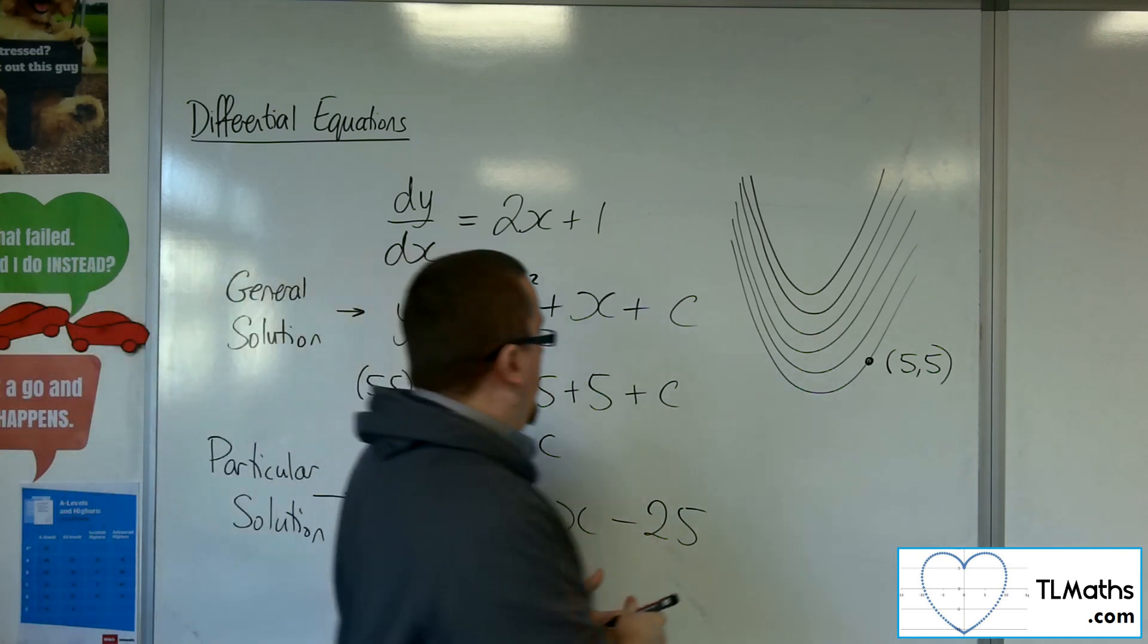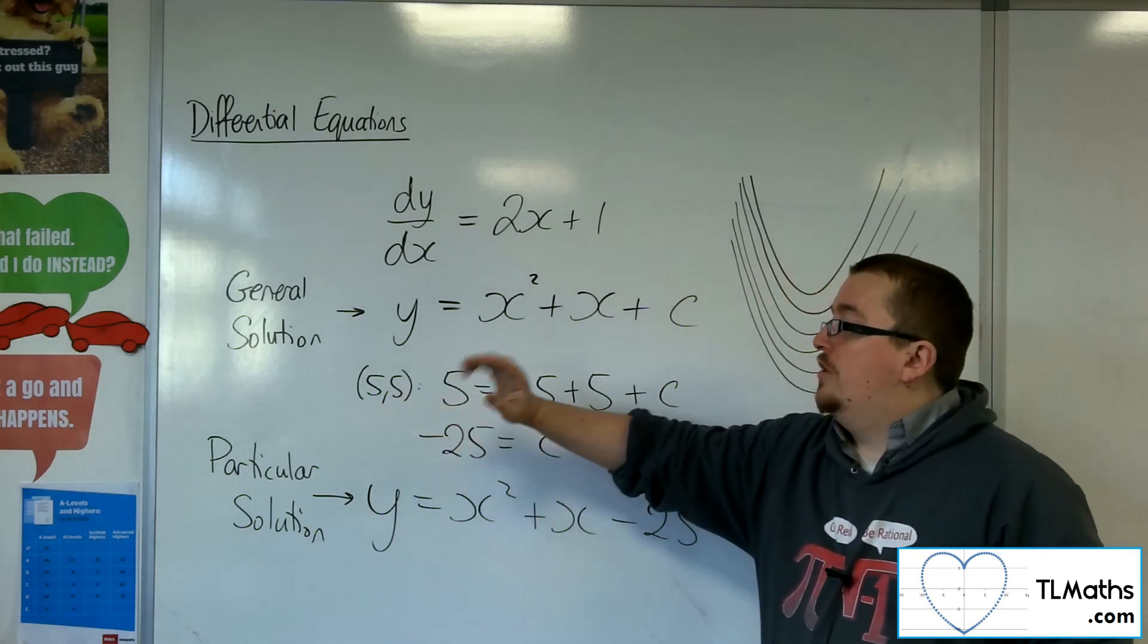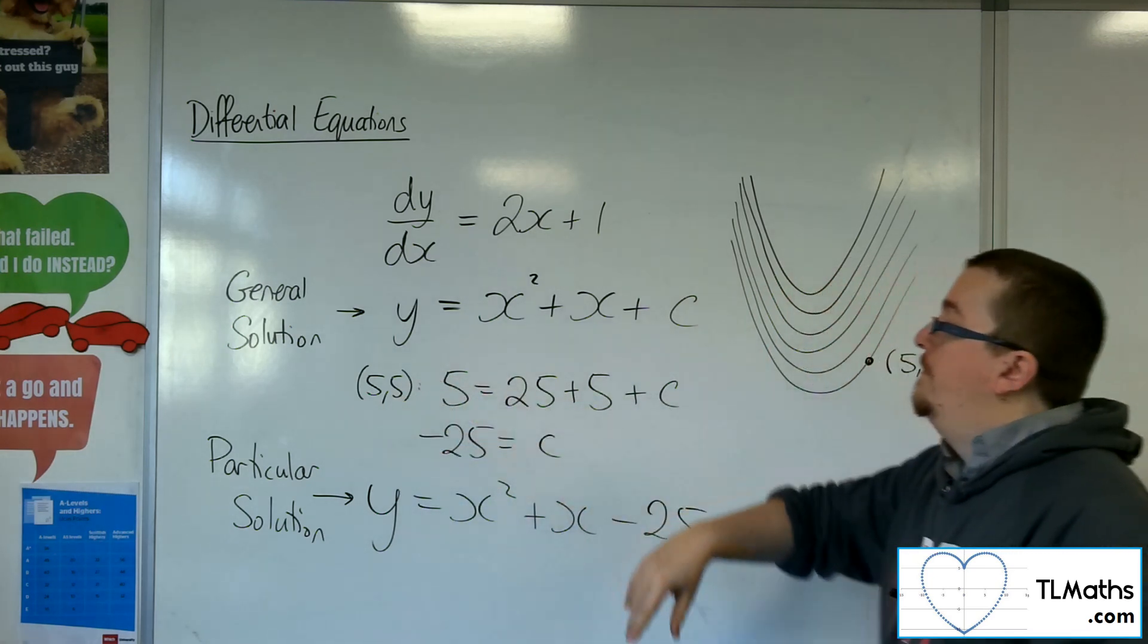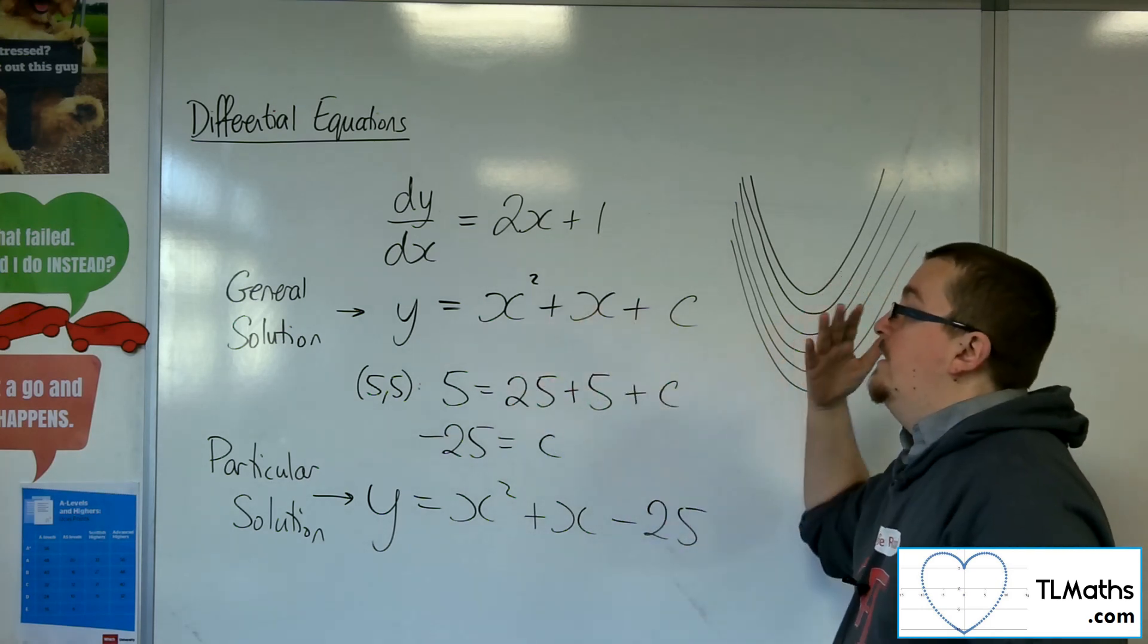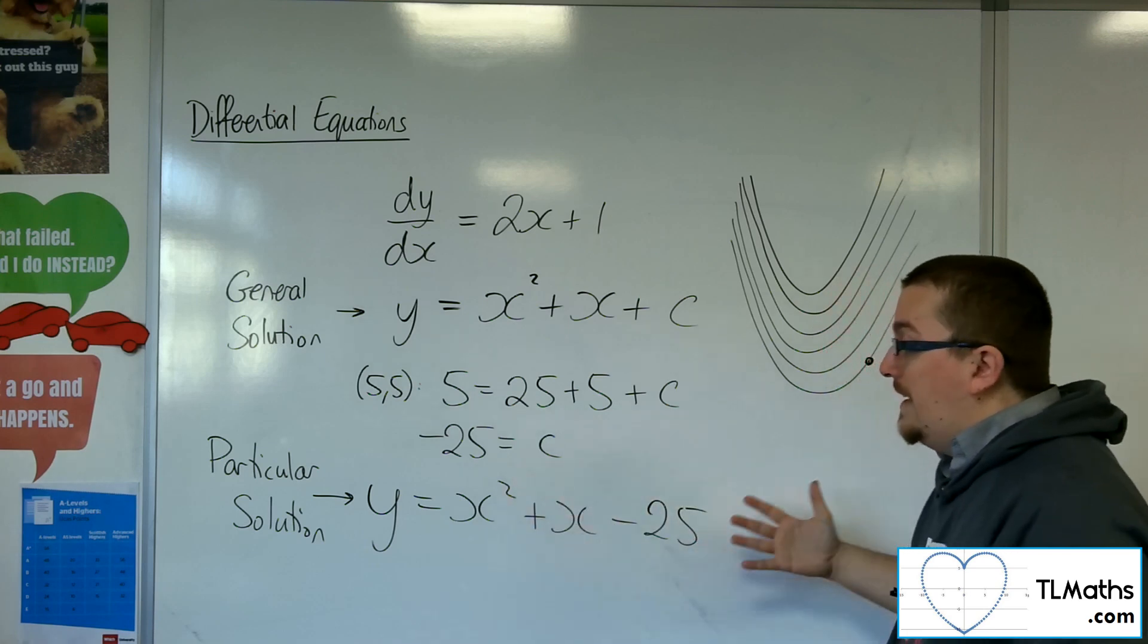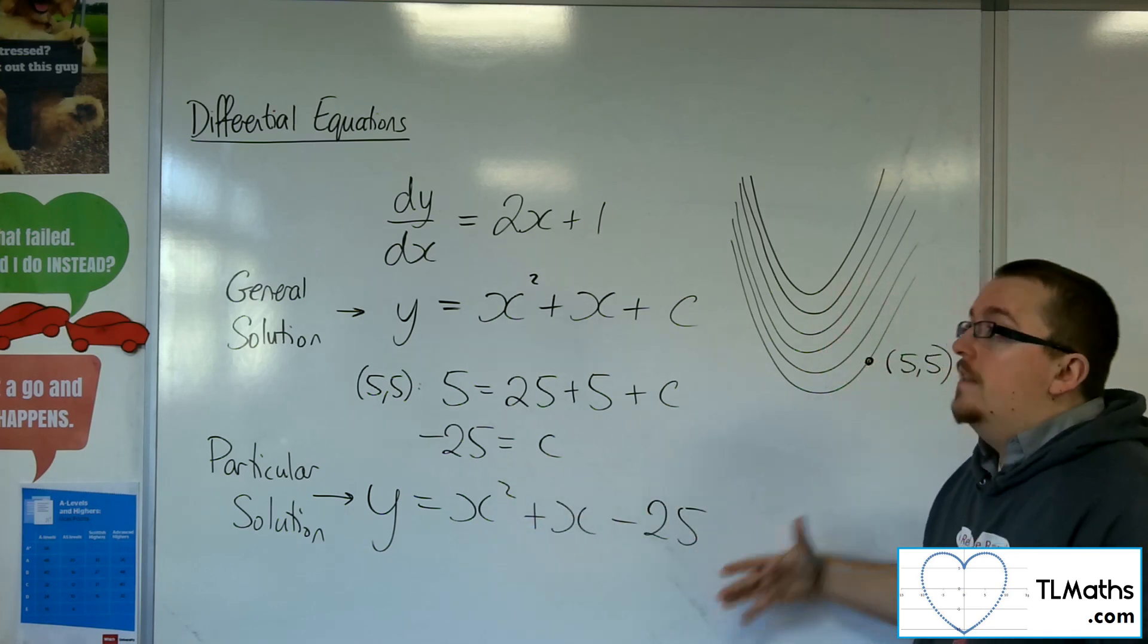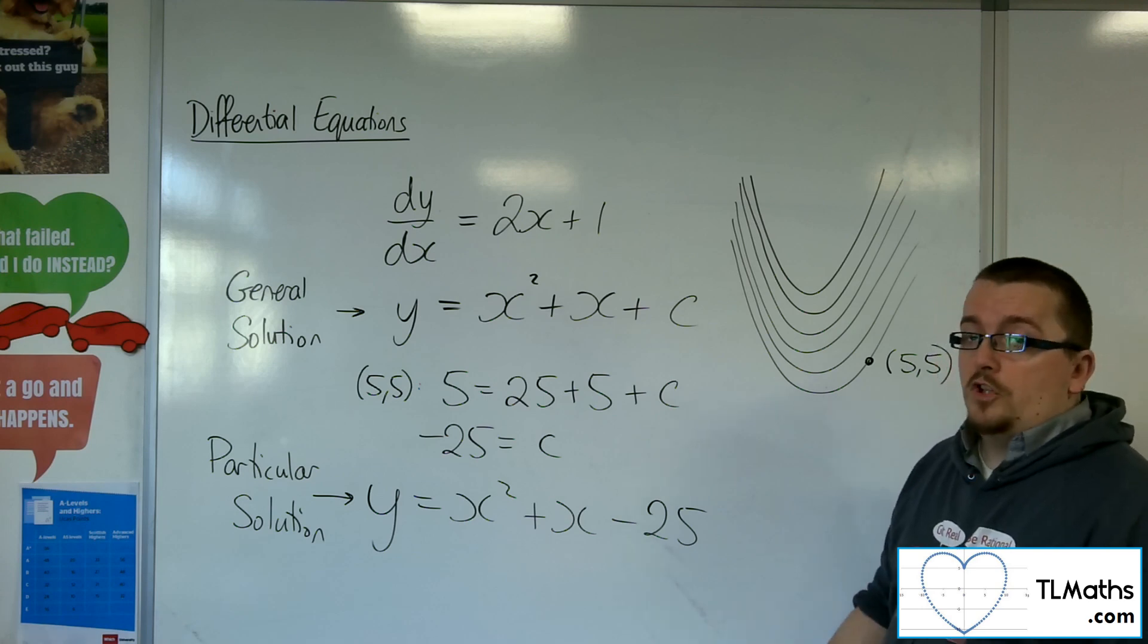So once we've used a boundary condition, initial conditions, whatever you want to call them, a point that we know the curve goes through, we can substitute in to work out the value of the constant in order to then give us the particular solution. That is solving a basic differential equation.